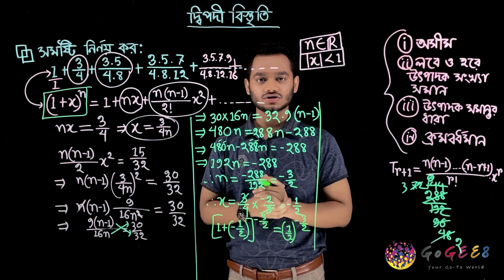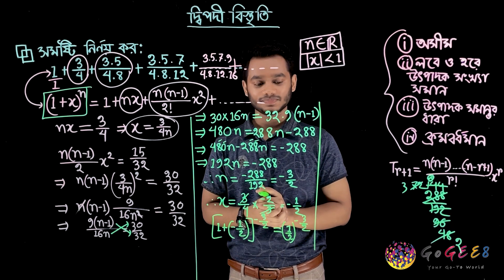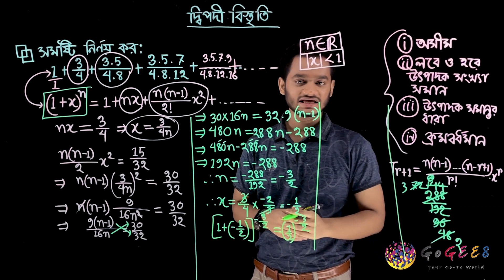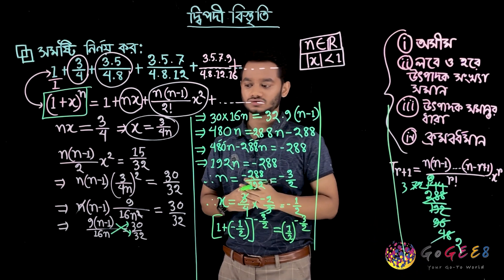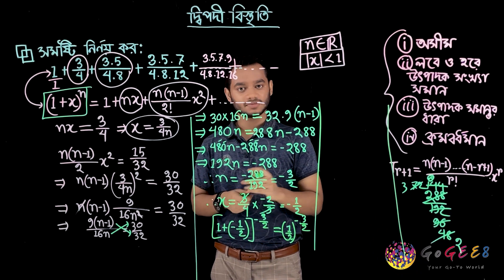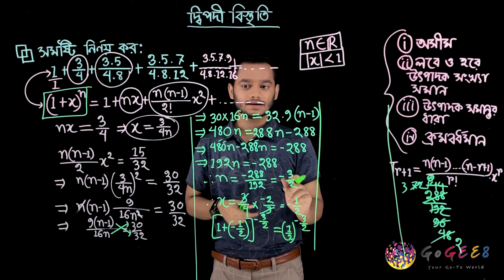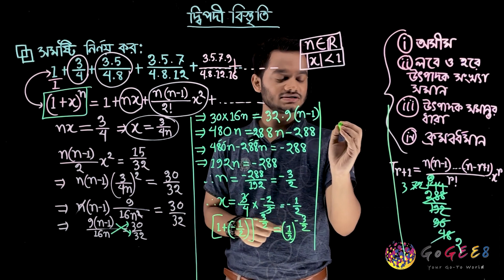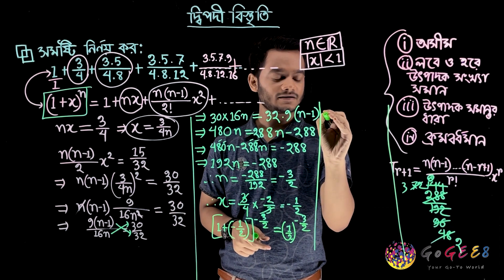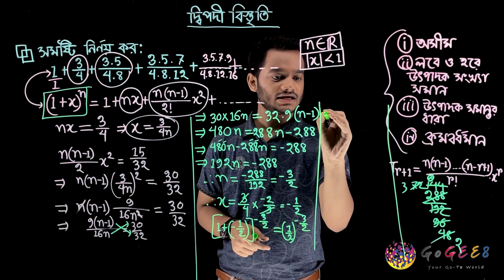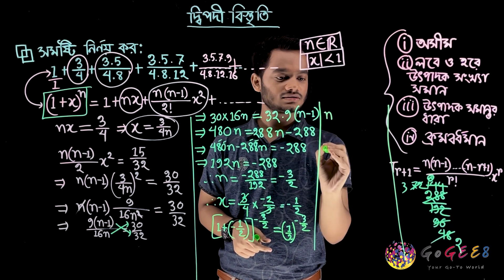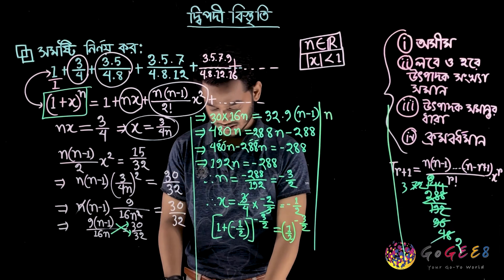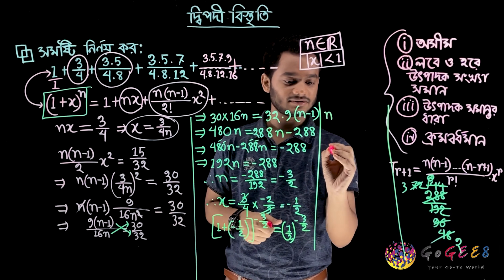That means we can do the calculation. Since we have nothing to do with the calculation, we can do the calculation. That means, we can do the calculation. Now we have no calculation. By 1, we are able to do that. 2, we are able to do the calculation.